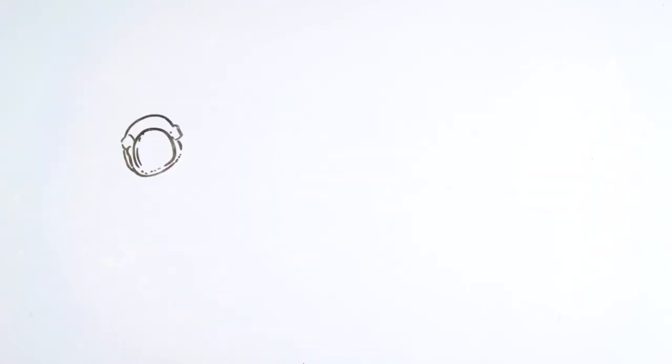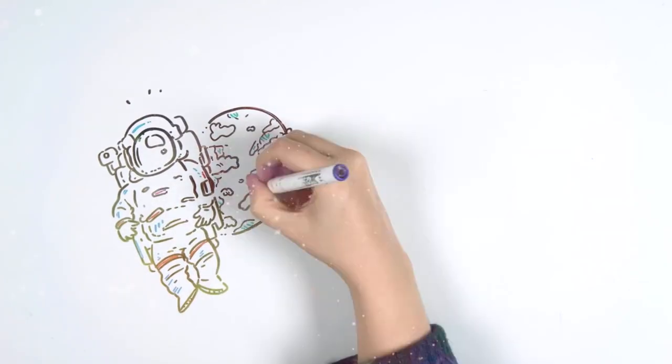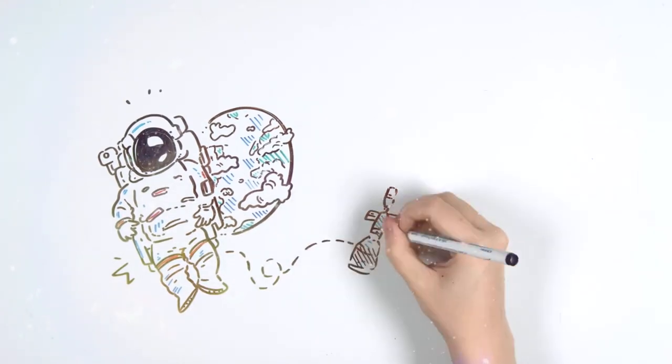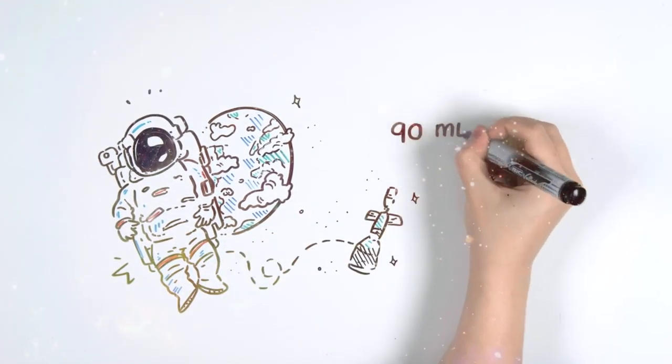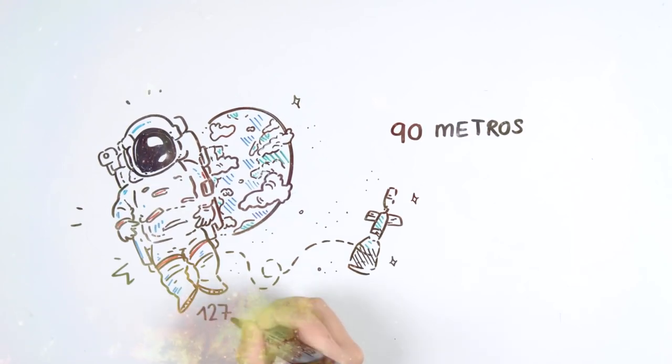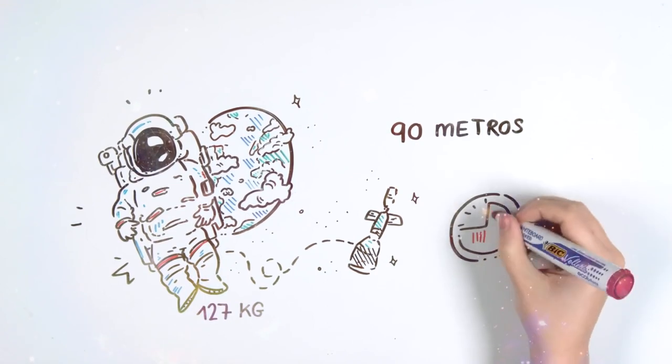The first astronaut to walk in space without being tied to a ship was Bruce McCandless in 1984. On his mission, he tested a jetpack that allowed him to get 90 meters away from the ship for 90 minutes. Currently, astronaut suits can weigh up to 127 kilograms, and the average time it takes to put one on is about 45 minutes.